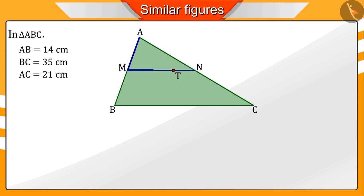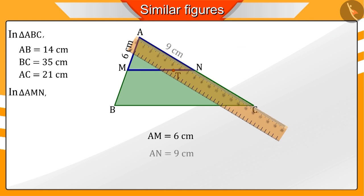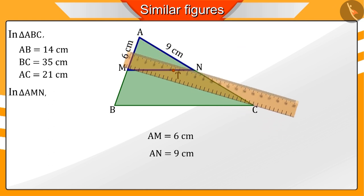As you can see, here we get a new triangle AMN. If we measure the sides of triangle AMN, AM measures 6 cm, AN measures 9 cm, and MN measures 15 cm.